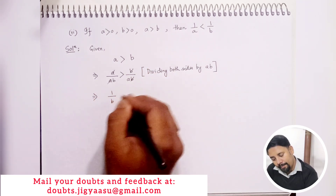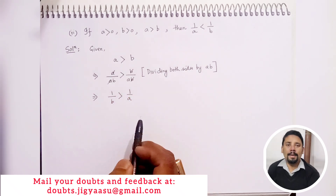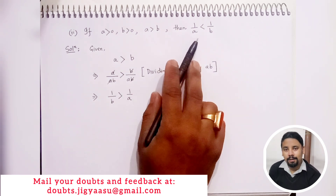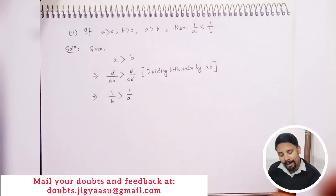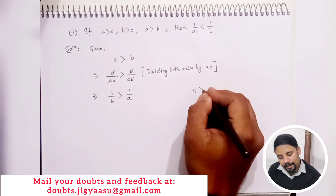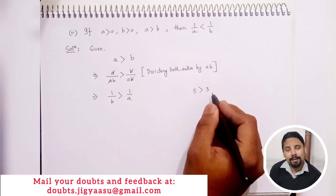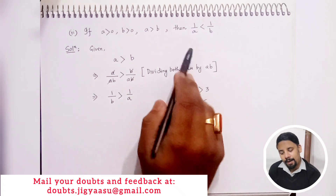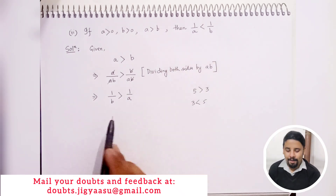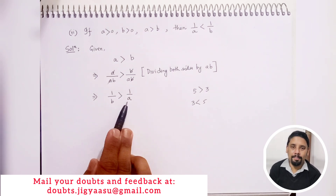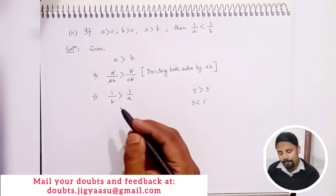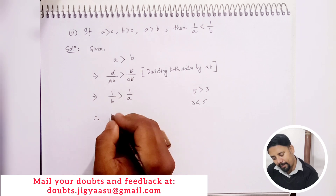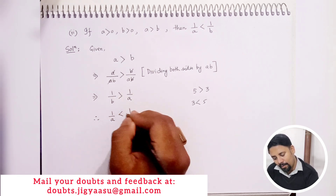After cancellation, we have 1 by b is greater than 1 by a. This is exactly what has been asked, just written in the opposite order — similar to saying 5 is greater than 3 is the same as 3 is less than 5. We have been asked to prove 1 by a is less than 1 by b, and we have shown 1 by b is greater than 1 by a. Therefore, 1 by a is less than 1 by b.